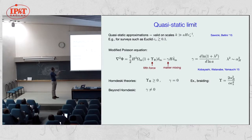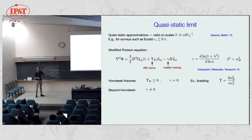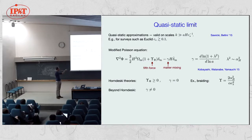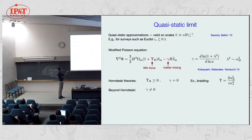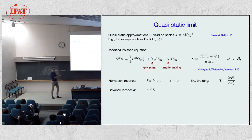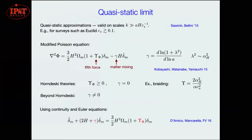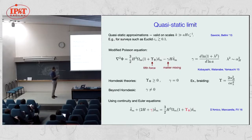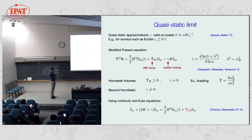This is completely changed by the introduction of a Beyond Horndeski term. First, the fifth force is no longer necessarily positive — it can be negative, giving a repelling fifth force. Furthermore, in the Poisson equation there is a new term proportional to the time derivative of the energy density of matter, or equivalently the divergence of the velocity via the continuity equation. Combining the Euler and continuity equations gives a modified growth equation with a fifth force term and a friction term on the left-hand side.